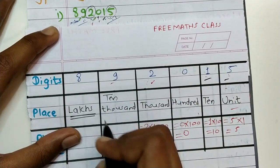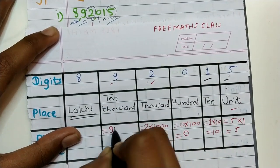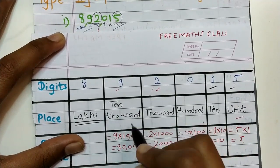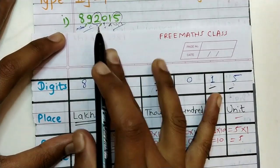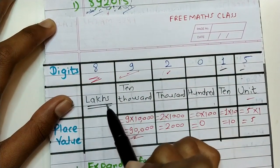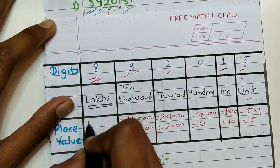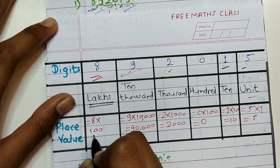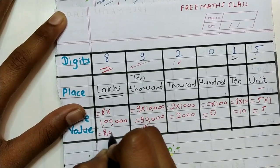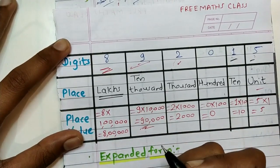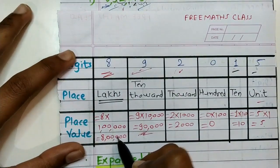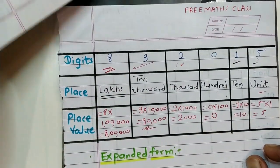Place value of nine equals nine into ten thousand, which is equal to ninety thousand. Place value of eight equals eight into one lakh, which is equal to eight lakhs. So place value of eight in this given number is eight lakhs. Now let us create the expanded form.